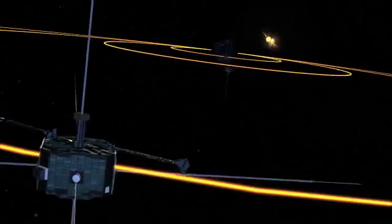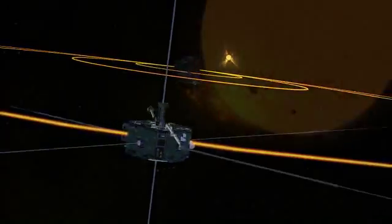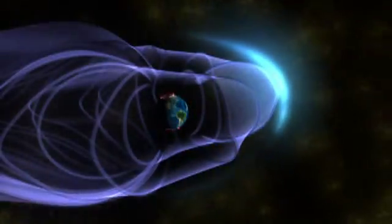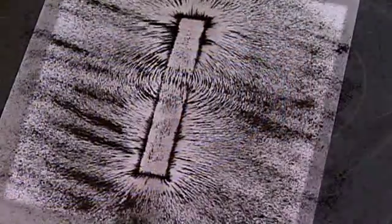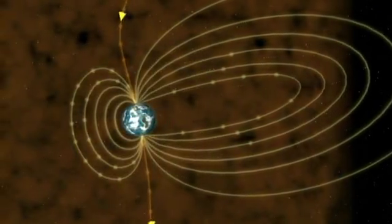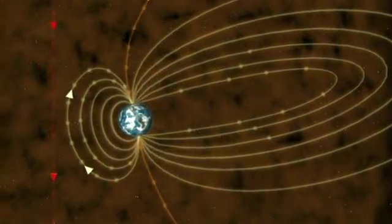NASA's Themis mission has overturned a long-standing belief about the interaction between solar particles and the Earth's magnetic field. The Earth's magnetic field is like a giant bar magnet. This magnet forms a protective field around the Earth, shielding us from the solar wind that is constantly streaming towards Earth.